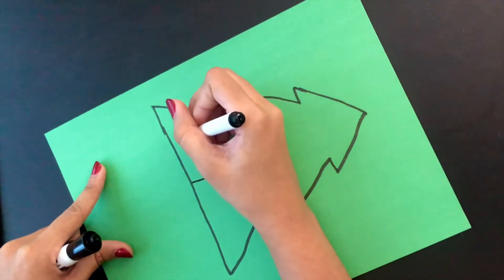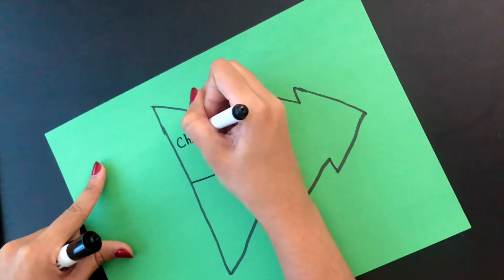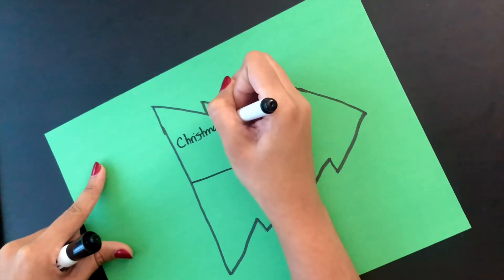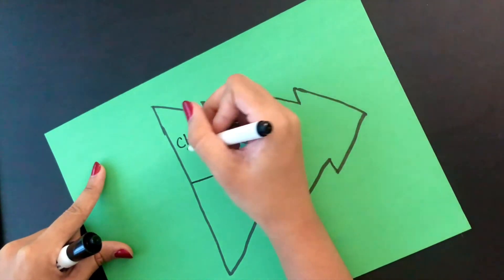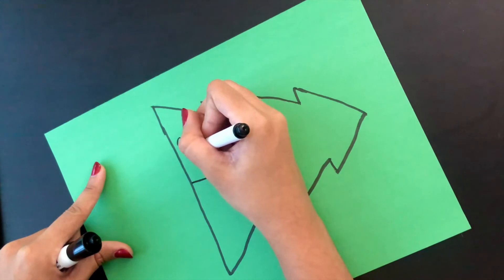Now we're going to write our topic, which is Christmas around the world. I'm going to write one part on one side of the tree, and the other part on the other tree.